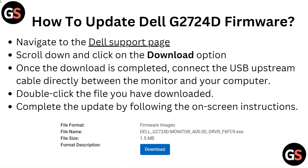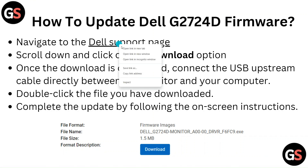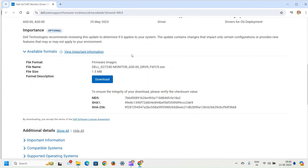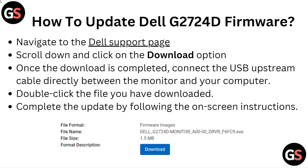To update the Dell G2724D firmware, navigate to the Dell Support page, scroll down and click on the Download option. Once the download is completed, connect the USB upstream cable directly between the monitor and your computer, double-click the downloaded file, and complete the update by following the on-screen instructions.